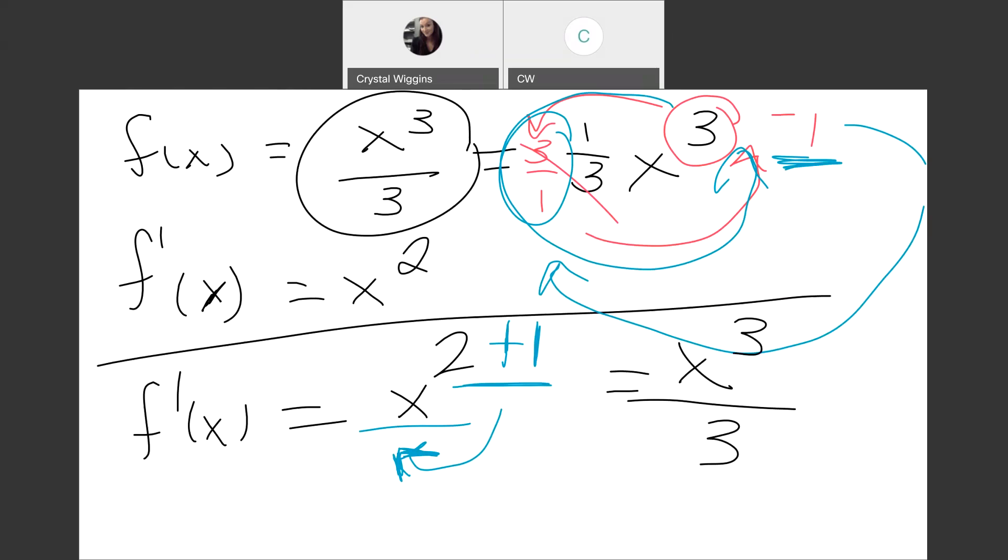Now the only thing that we have to check on is this plus c because we have no idea if the original function was x cubed over 3 plus 8, where the 8 would have disappeared in the derivative and became 0. So we have to account for an unknown constant. And c might be 0. In this case, c is actually 0. But there is no way to know that if we just start here.